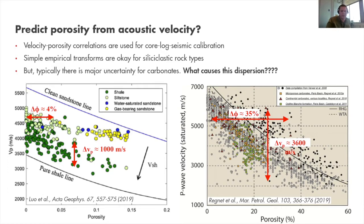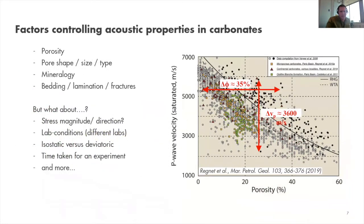The question really is: what causes this dispersion? From previous work we know that porosity plays a big role, as do pore shape, size, type, mineralogy, bedding, lamination, and fractures — all of which play a huge role in controlling this spread in data points.